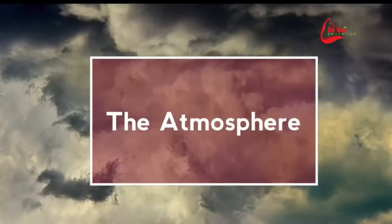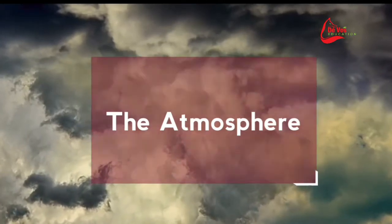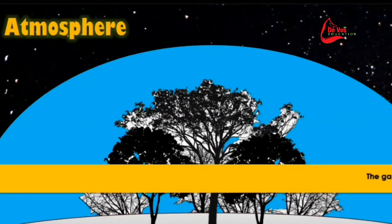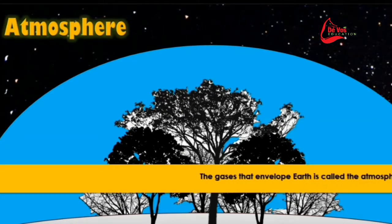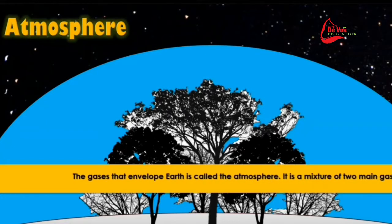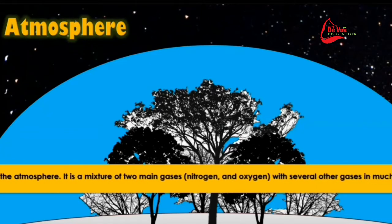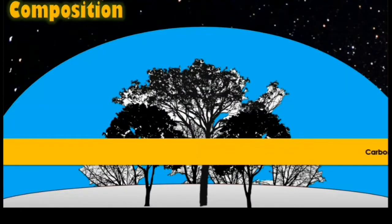The atmosphere is the layer of gases that surrounds the Earth. The gases in the atmosphere allow organisms to respire and regulate the temperature of the planet. The atmosphere's ability to absorb the ultraviolet rays of the sun is what allows life on Earth to survive. It is a mixture of two main gases, nitrogen and oxygen, with several other gases in much lower quantities.